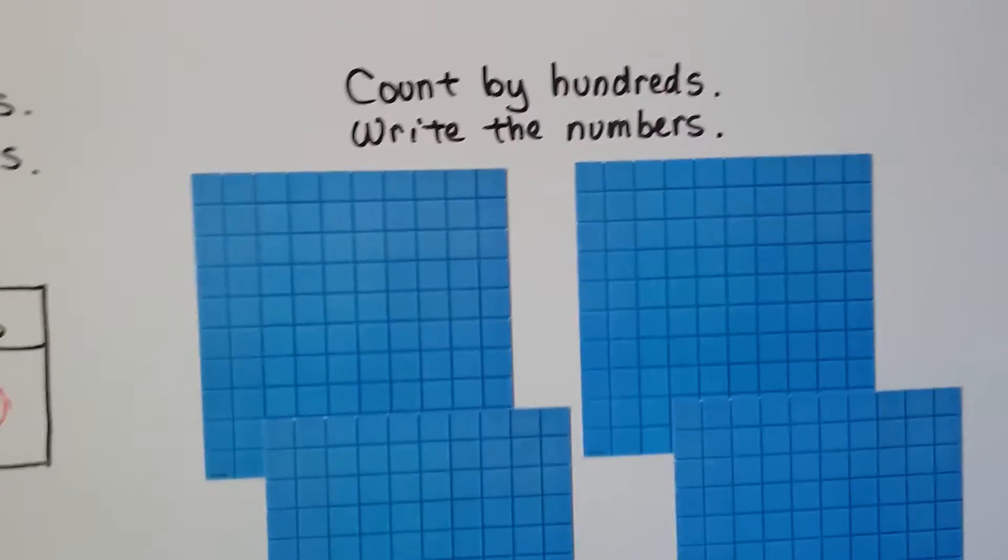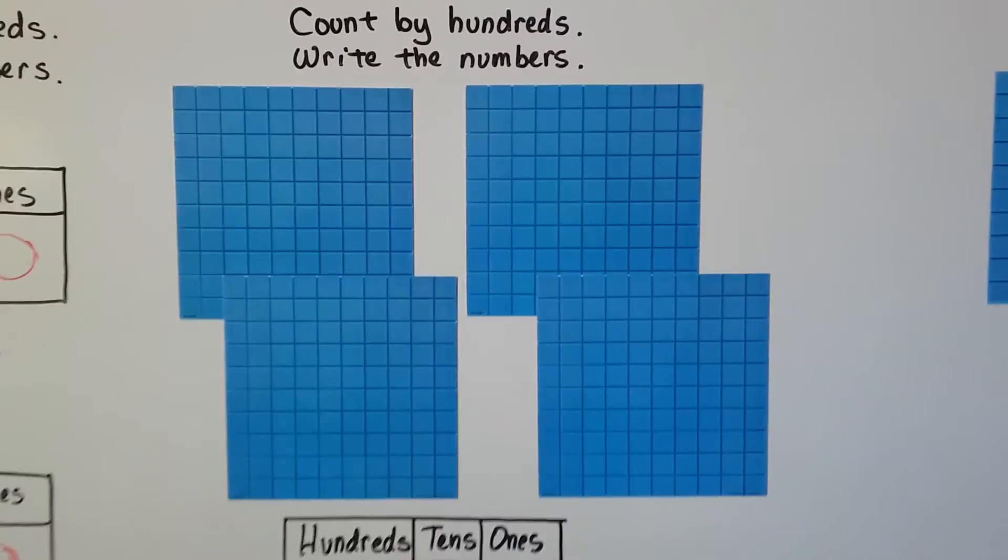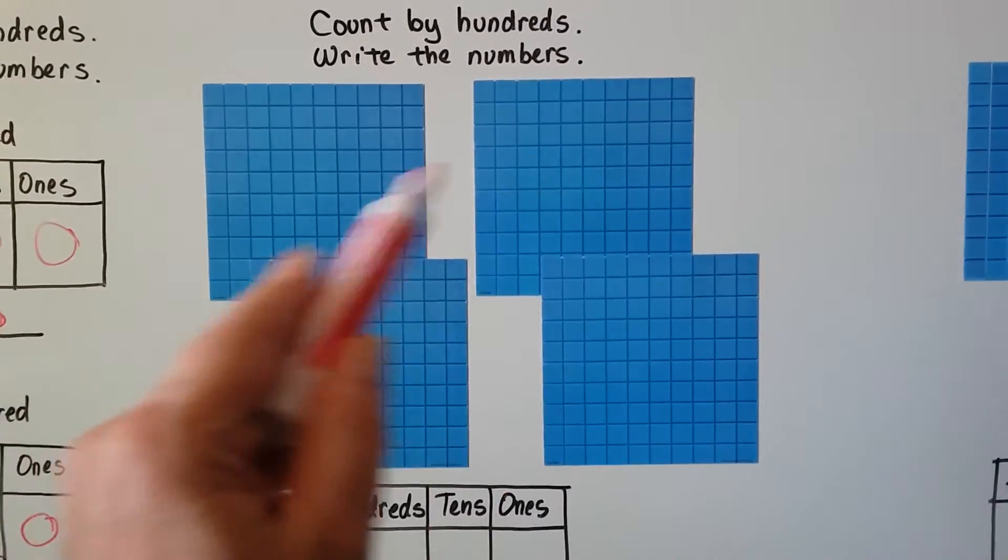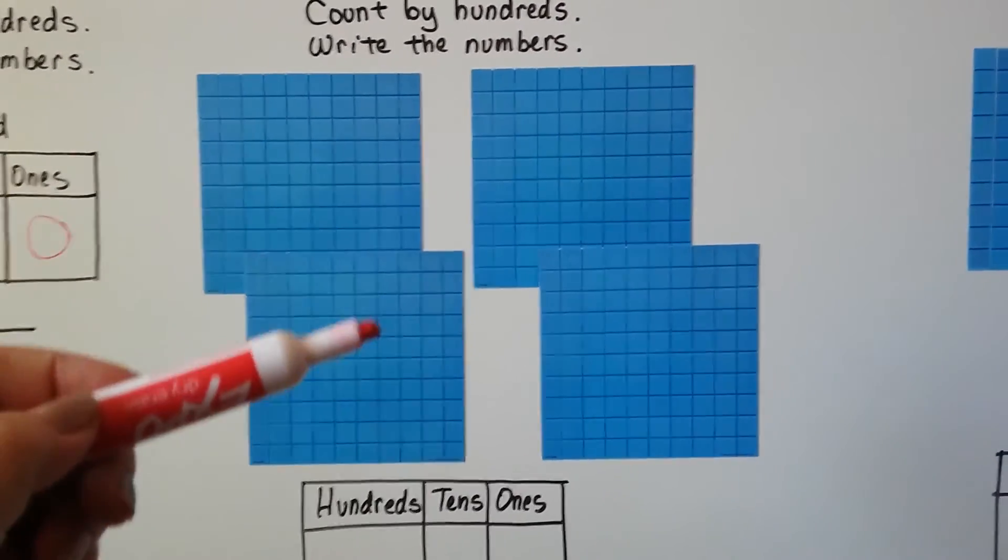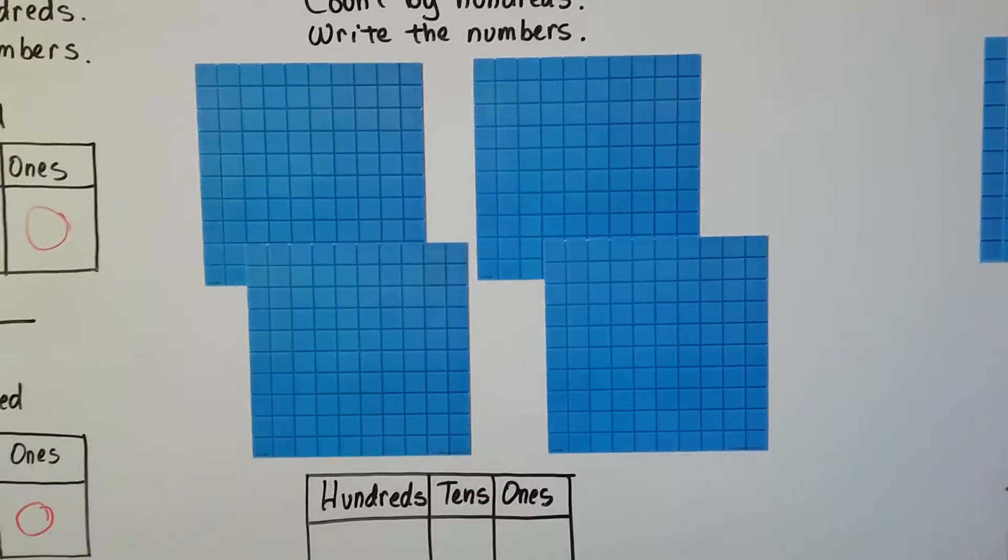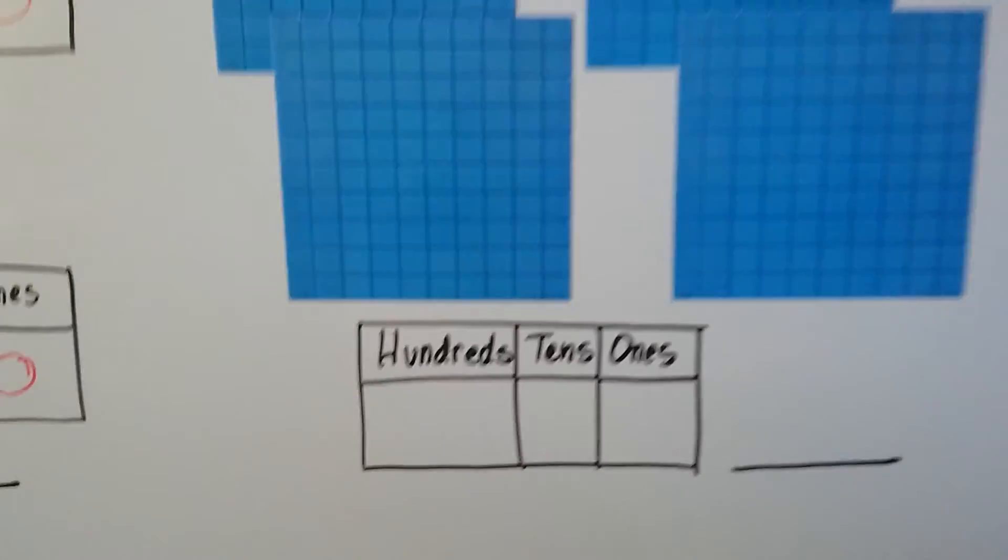Now look at these. We can count by hundreds and write the numbers. How many hundreds are here? 100, 200, 300, 400. There's 400.